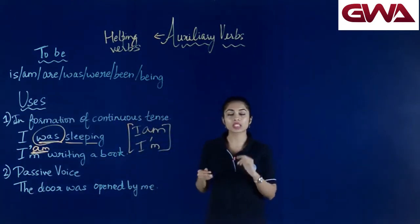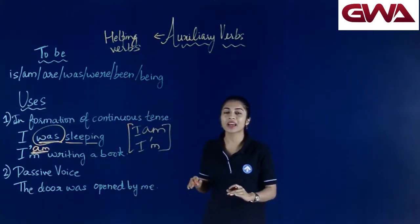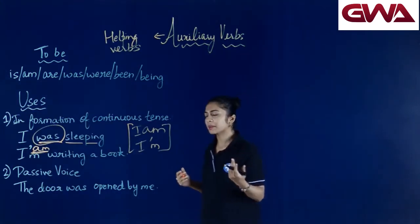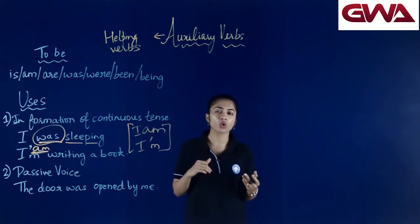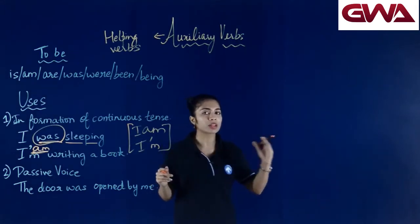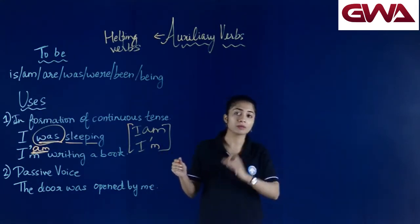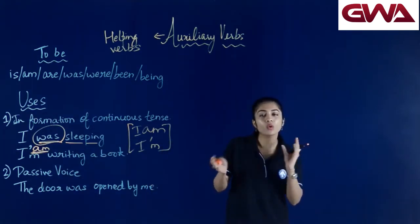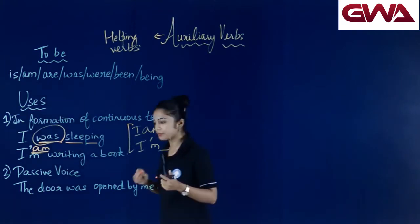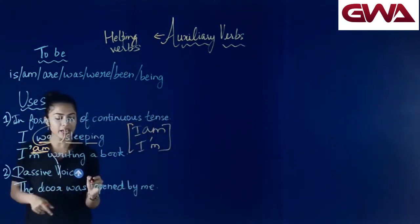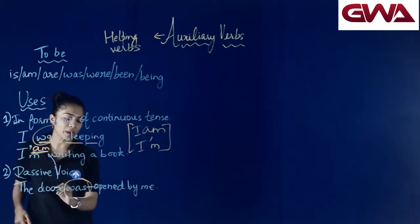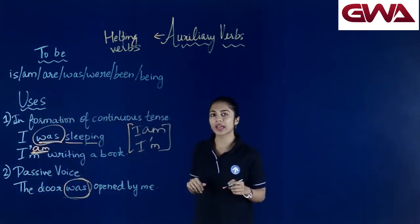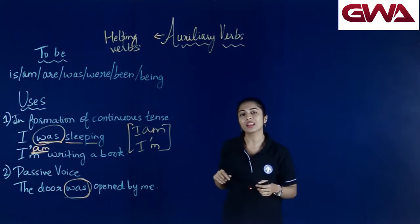Second use है to be verbs का — हम उन्हें passive voice में इस्तमाल करते हैं। Active voice वो होती है जहाँ subject perform करता है action — a subject acts upon a verb। लेकिन passive voice में उल्टा होता है — object act करता है। तो यहाँ पे door object है, was हमारा to be verb है — and was opened by me। To be verbs passive voice में भी इस्तमाल किये जाते हैं।